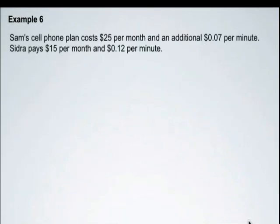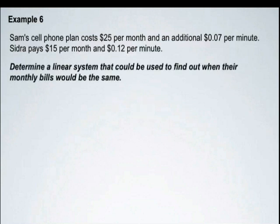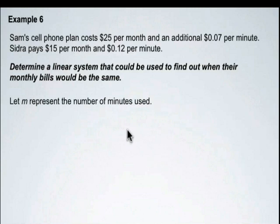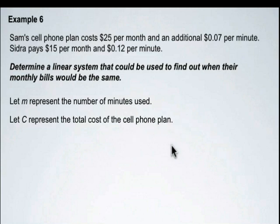Now for example 6. Sam's cell phone plan costs $25 per month plus an additional $0.07 per minute. Sidris pays $15 per month and $0.12 per minute. We want to find the number of minutes at which their monthly bills would be equal. Let m represent the number of minutes used and c represent the cost. Write an equation for Sam's plan and one for Sidris's plan, then use elimination to solve for the unknown.